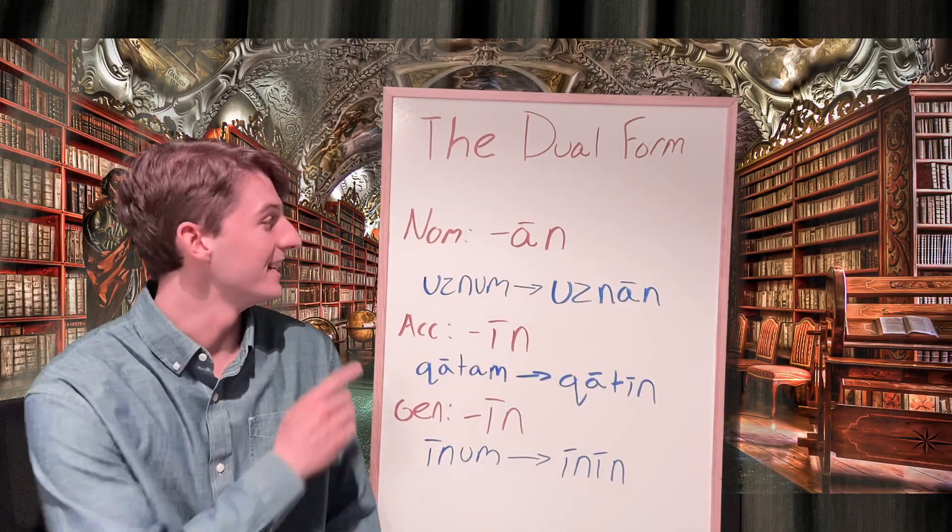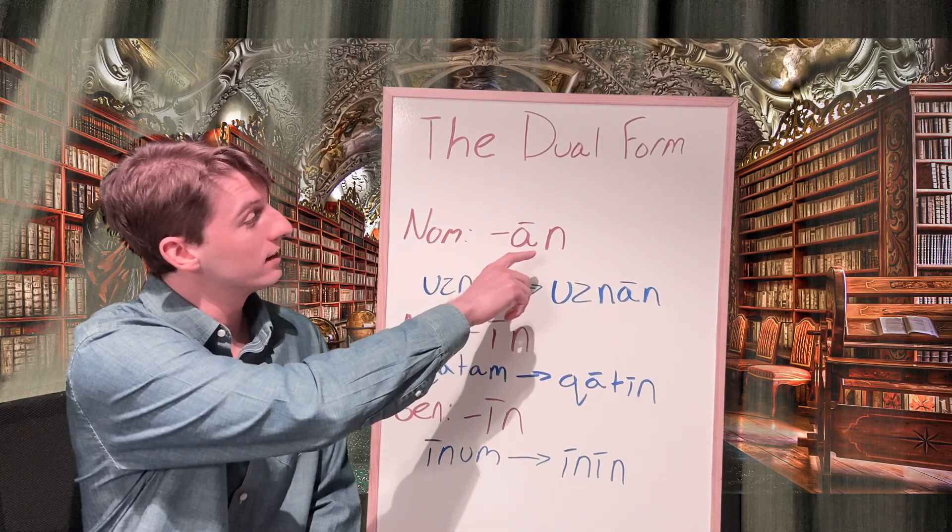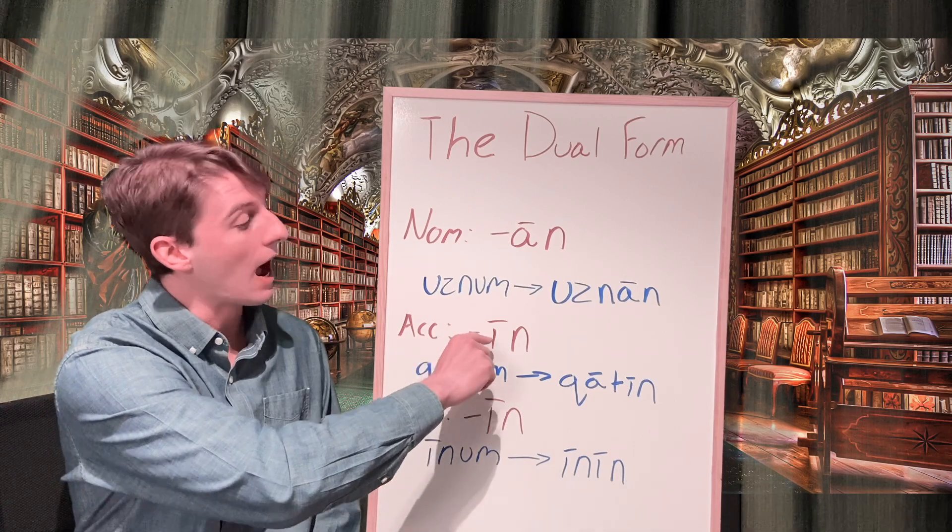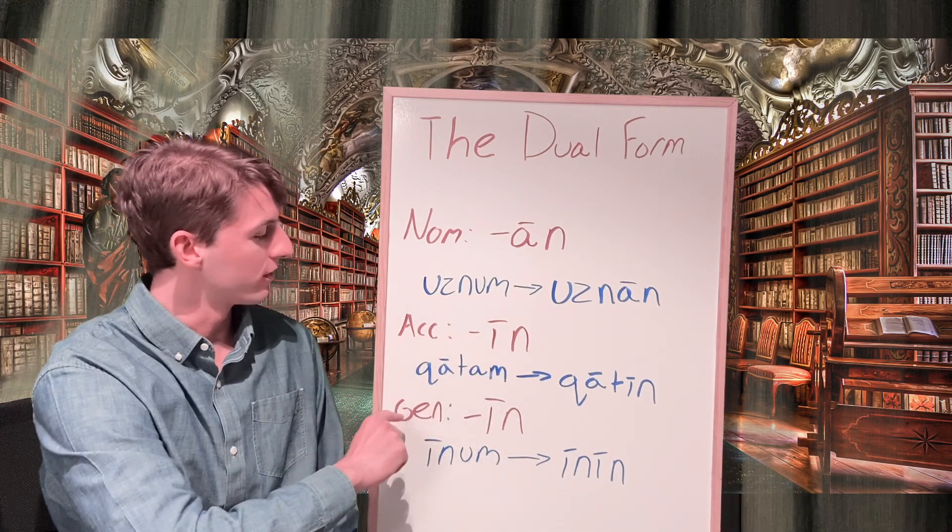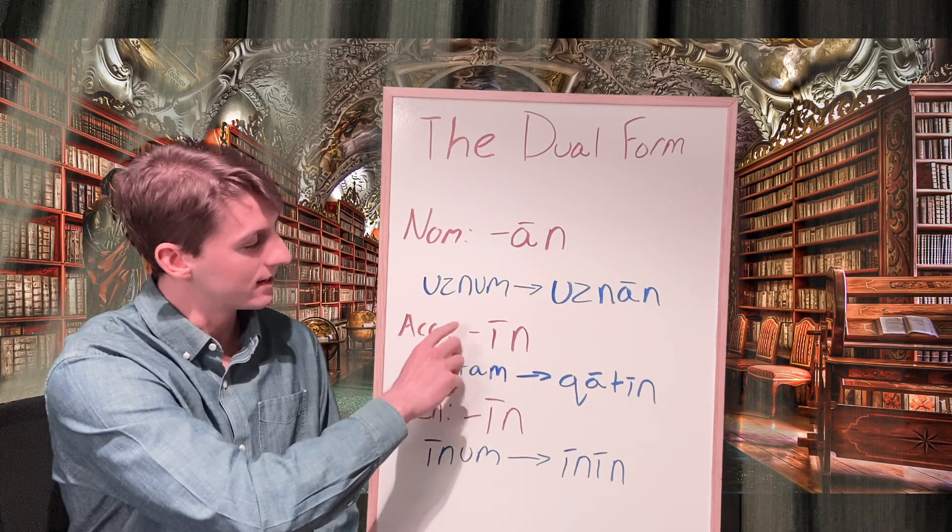Here I have each case ending for the dual written for you. For the nominative, it's going to be a long A and an N, which is going to be added to the stem. For the accusative, it's going to be a long I and an N. And for the genitive, it's going to be the same. These are both going to be added to the stem and it's going to look identical.